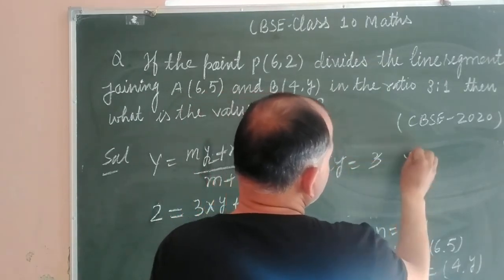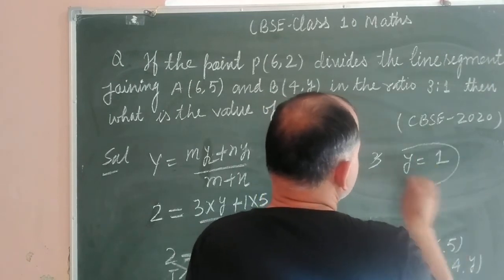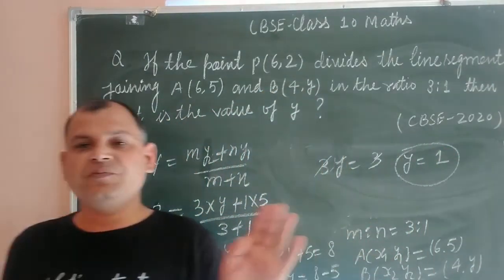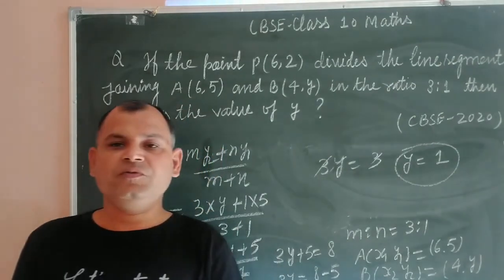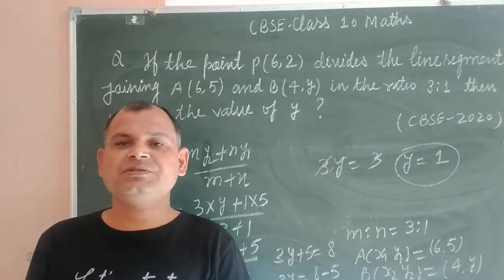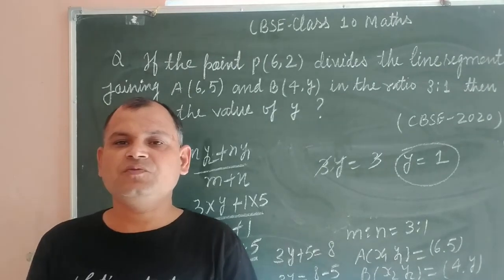So the unknown ordinate of point B is 1. I hope you got it. If you like my video, please subscribe to my channel and share with your friends. Thanks so much.